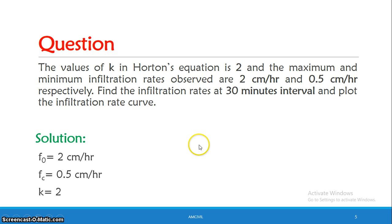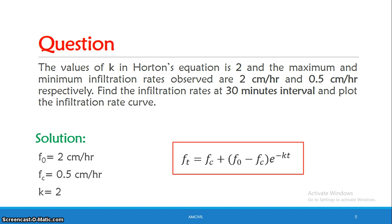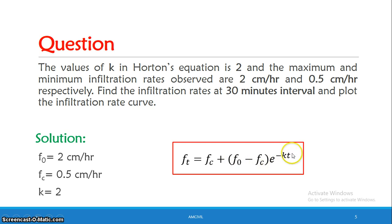We are going to calculate the infiltration rates using the values of Fc, F0, and K. We change the time at intervals: 0, 30 minutes, 1 hour, 1.5 hours, and so on, substituting each into Horton's equation to find Ft.